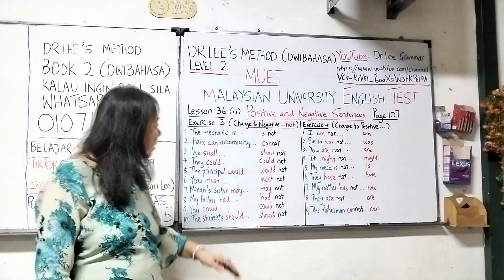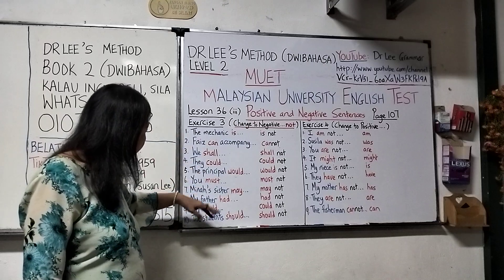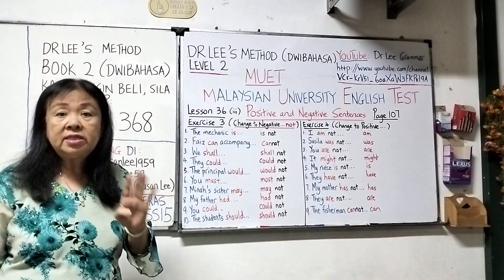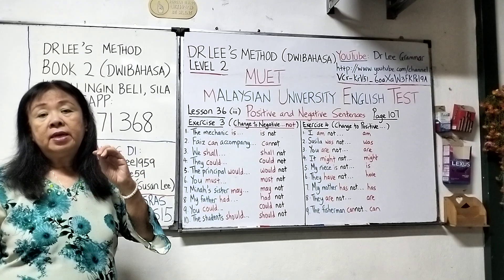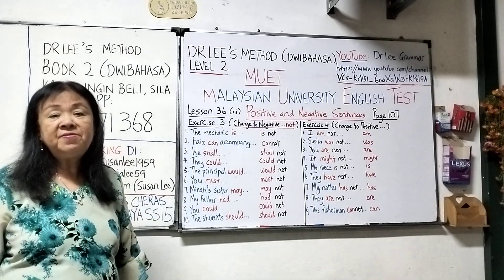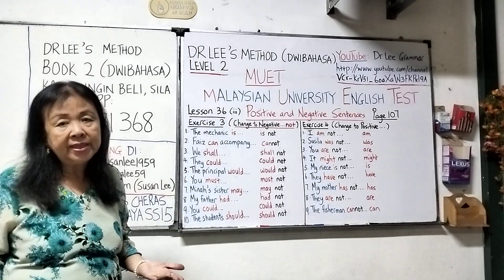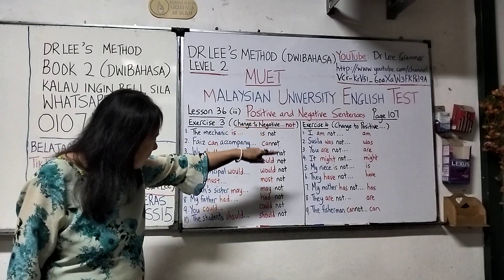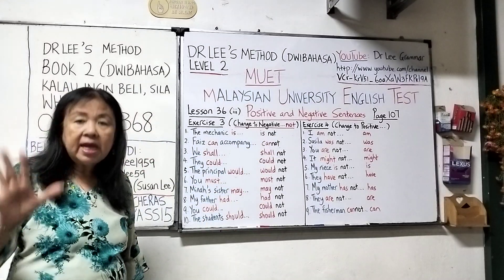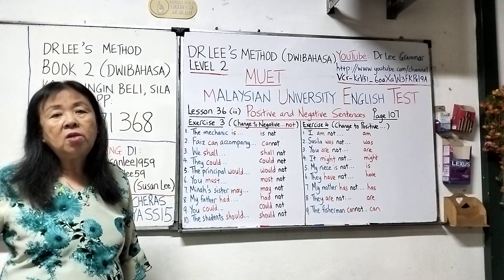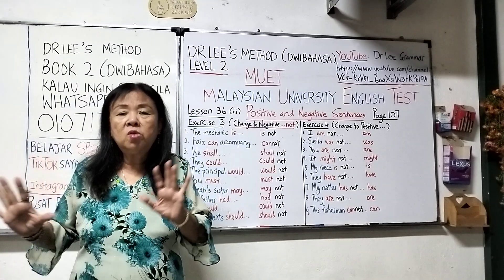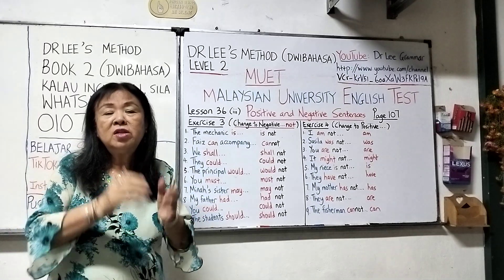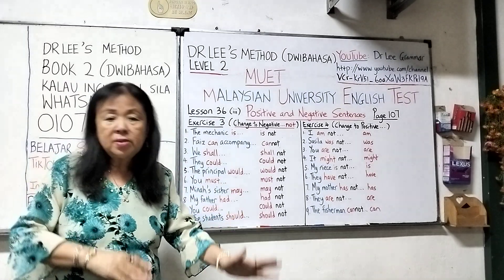So remember: is, have, was, are, has — all these are verbs. All you have to do is put 'not' behind. If there's already a 'not' there, throw the 'not' away — it becomes positive automatically. And can, shall, could, would, must, may, should, might — all these are verbs also but they belong to another category called modal verbs. Whether they are regular verbs or modal verbs, the way to answer is the same — put 'not' behind, or throw the 'not' away — either way, whether you change to positive or to the negative, that's it.